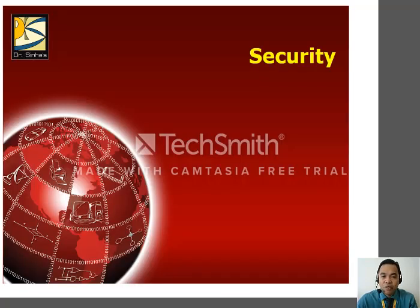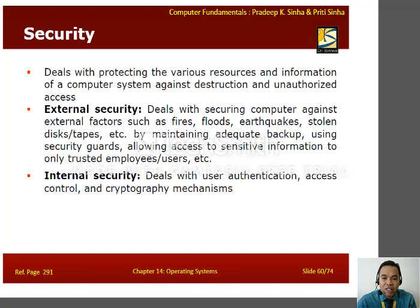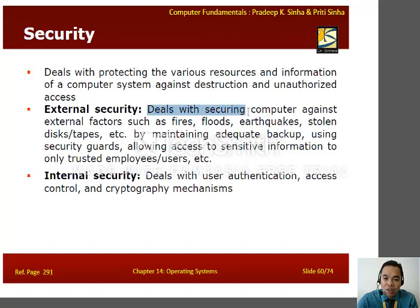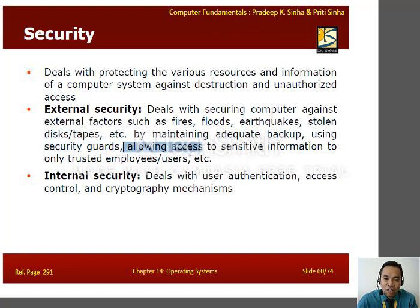Another function of an operating system is security, which deals with protecting resources and information against destruction and unauthorized access. There are two types: external and internal. External security deals with protecting the computer against external factors such as fires, floods, earthquakes, stolen disks or tapes, by maintaining adequate backups using security cards and allowing access to sensitive information only to trusted employees.